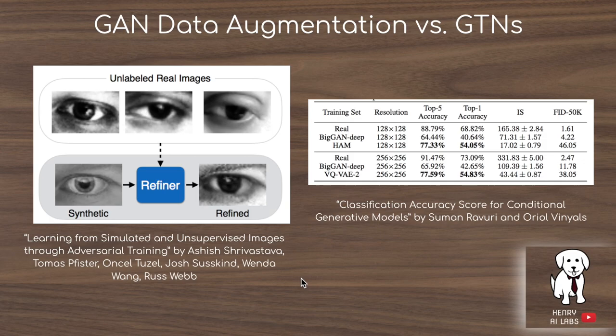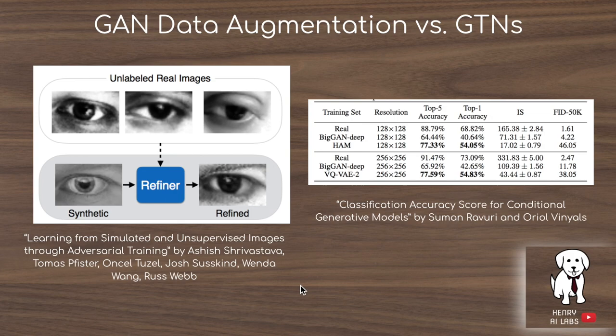There are other related meta-learning approaches for data augmentation worth noting. SimGAN takes images sampled from a graphics engine and aligns them with the real dataset using an adversarial loss to make images better for classifier training. The classification accuracy score paper for conditional generative models examines how well classifiers perform when trained on datasets generated from BigGAN and VQ-VAE-2, both providing interesting discussion around meta-learning generative networks for data augmentation.